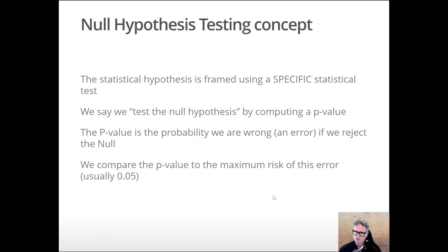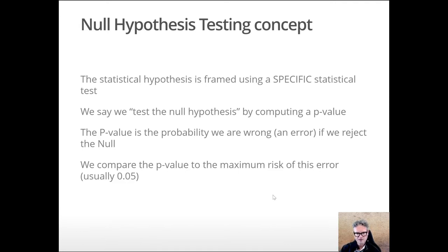We need to have in mind a specific statistical test. One of the hardest things about learning statistics is that before you become proficient, you need to learn a lot of different statistical tests and what situations they fit in before it's easy to think about things in this philosophical versus practical way. The objective test is a test of the null hypothesis. We do that by generating a test statistic — we might use a t-test to compare two means, a two-sample t-test. But what we really look at is the p-value.